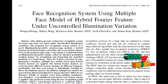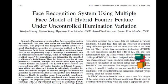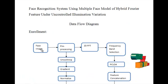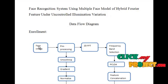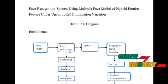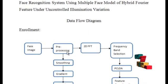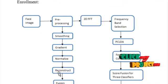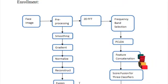Let's have a discussion on the Data Flow Diagram. You have to consider a Phase Image for Enrollment, as mentioned in the Multiple Phase Model. You have to split the Phase Image into three models and preprocess the input image for all three models. Steps involved in preprocessing are Smoothing, Gradient, Normalization, Reconstruction, and Fusion.